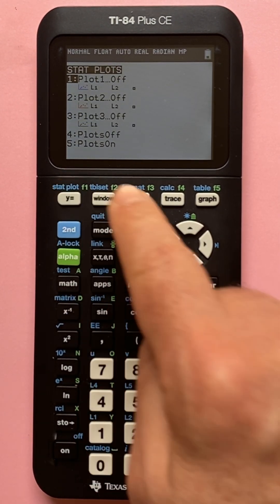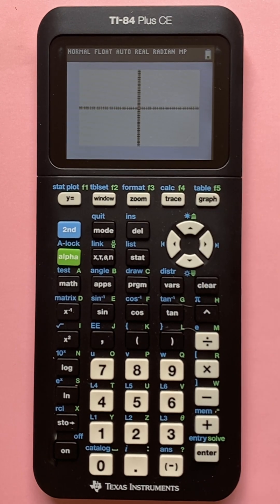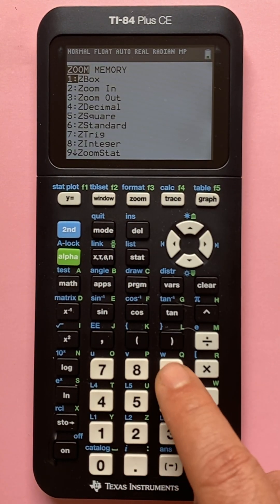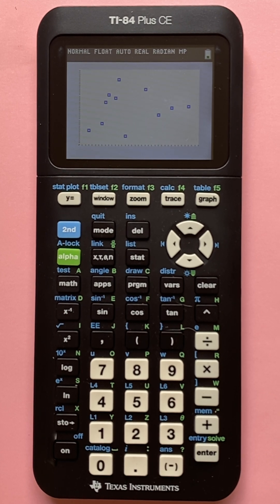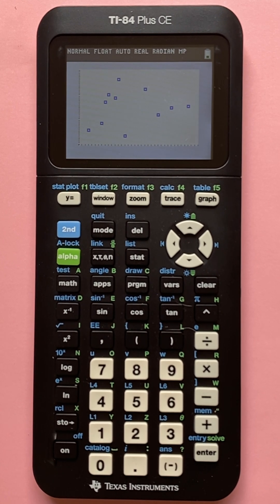Now you do a stat plot, second y equals, and typically I would graph this, and if I hit zoom stat, which is nine, I'm going to see my data. But I want to see if there's a hidden pattern inside there, so I'm going to check my residuals.